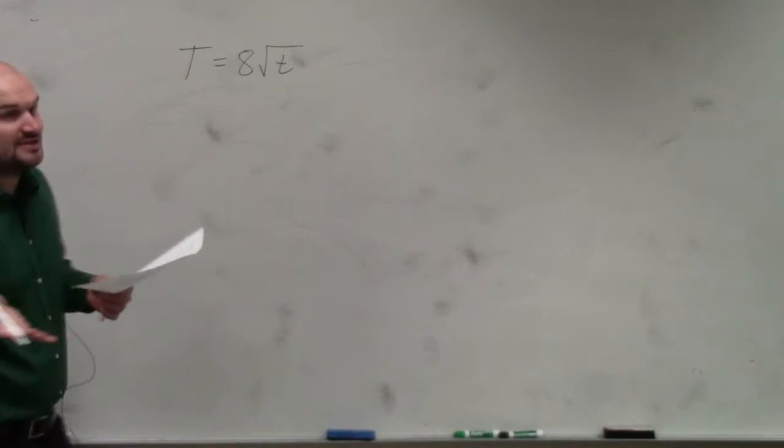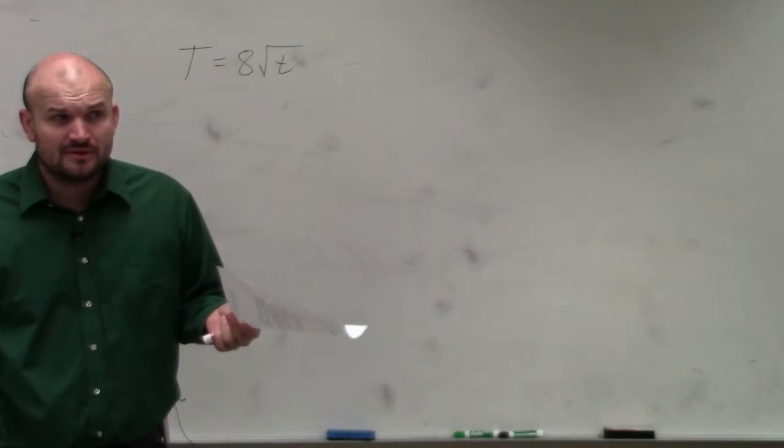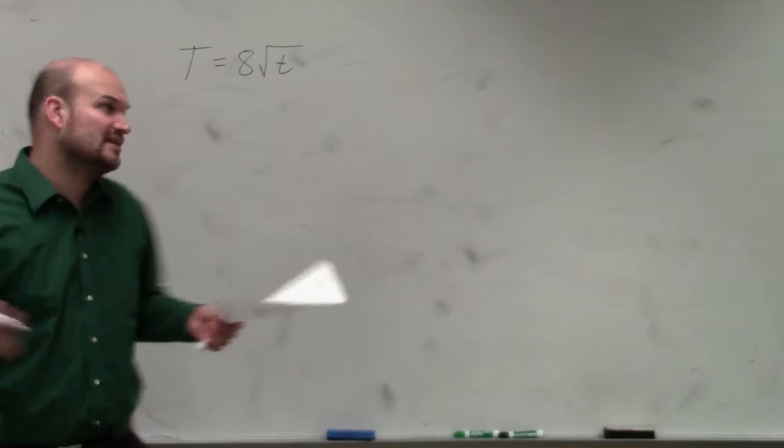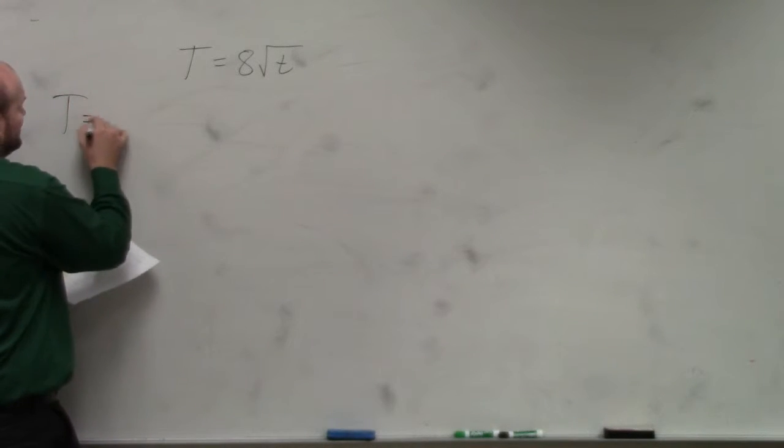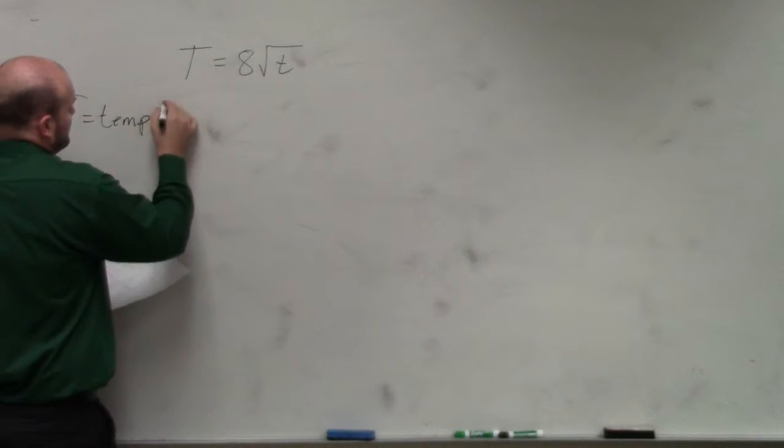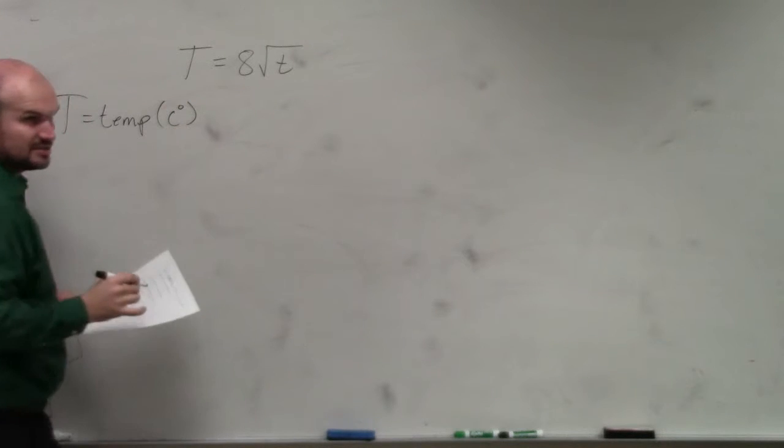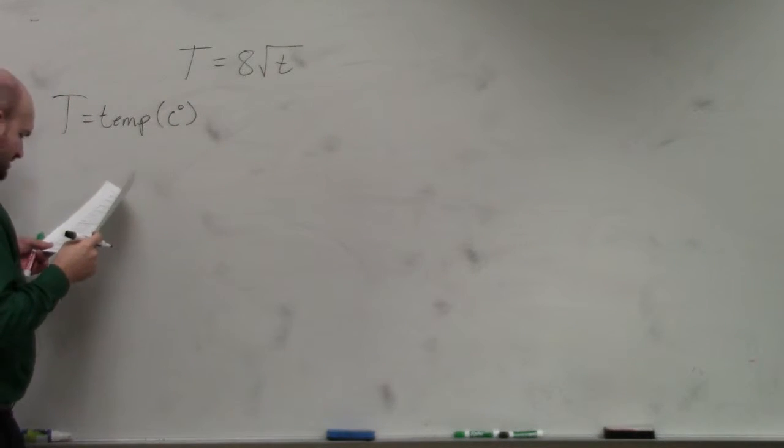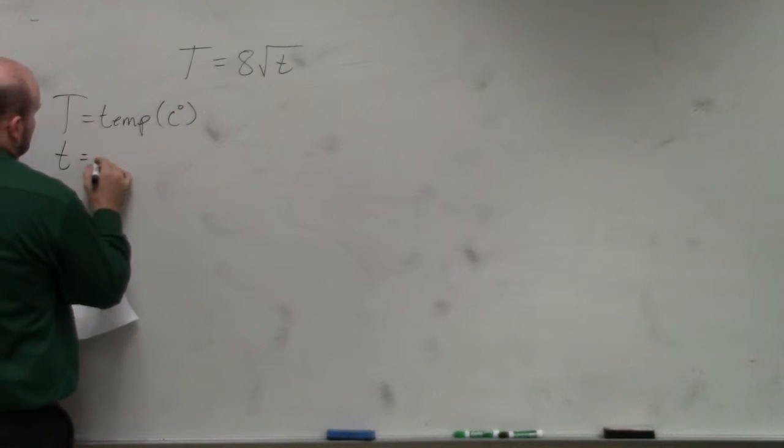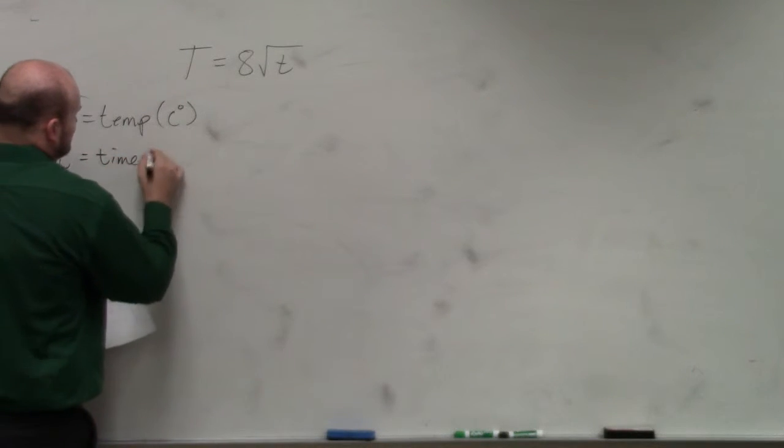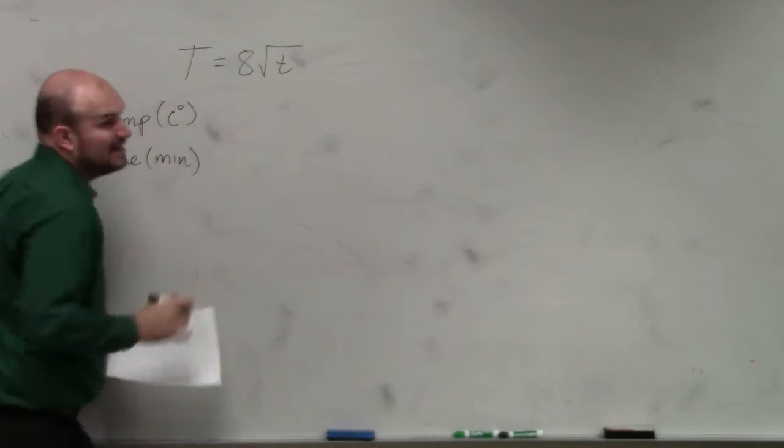So first of all, if you guys are having trouble with this, the first thing I would do is at least let's identify the variables again. Big T is temp in Celsius, right, where little t is minutes, or time in minutes.